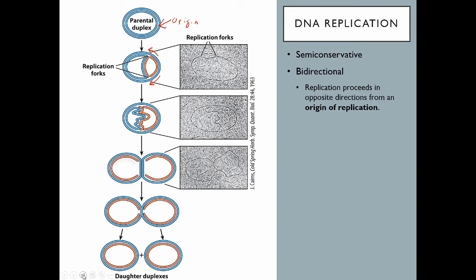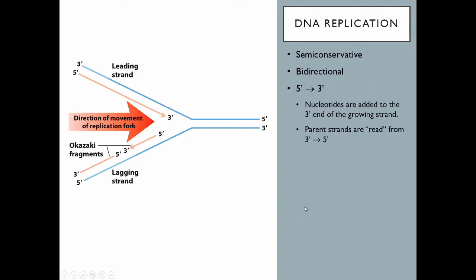In a linear chromosome, the same idea applies, except the replication forks reach the ends of the chromosome and simply stop. Another important fact is that DNA replication proceeds in the five-prime to three-prime direction. The enzymes that make DNA always move in the same direction — starting from the five-prime end of the growing strand and always adding new nucleotides to the three-prime end. So replication of the daughter strand proceeds in the five-prime to three-prime direction.